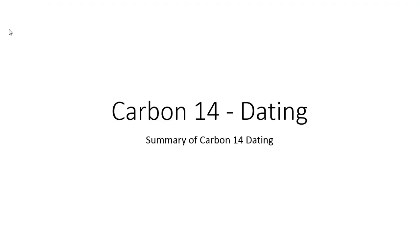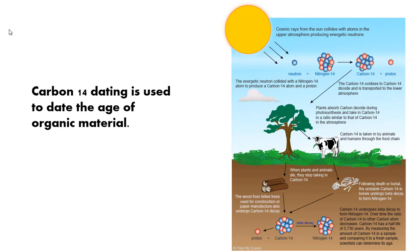Carbon-14 dating summary: Carbon-14 dating is used to date the age of organic material. So the big thing is organic. That means that the material had to be living or once living. It cannot be a rock or something like that. It had to be something that was alive at one time.